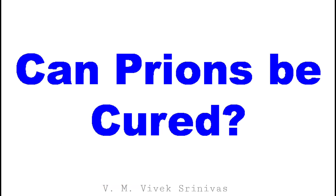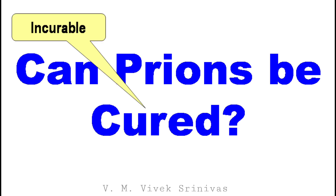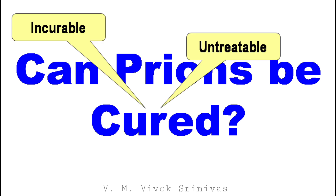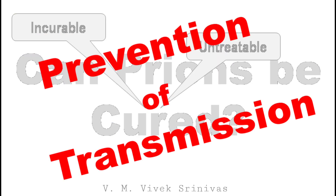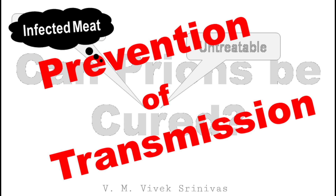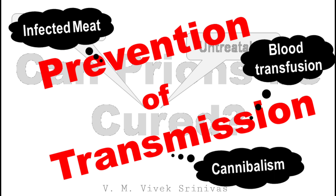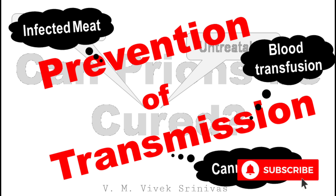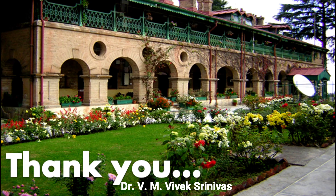Can prion diseases be cured? They are completely incurable and untreatable. The only promising way is prevention of transmission, by avoiding consumption of infected meat, blood transfusions, and cannibalism. With this we come to the end of prion diseases. In the next video presentation we will discuss some other viral diseases in detail. Hope the lecture is informative and useful. Thank you.